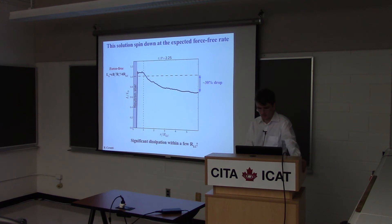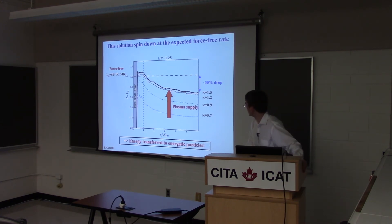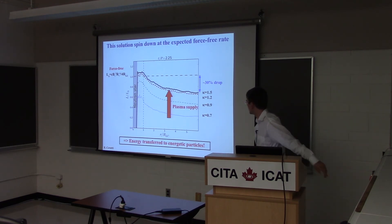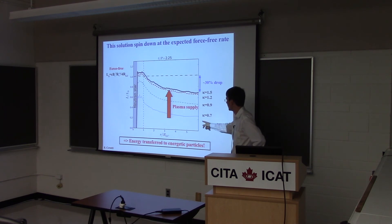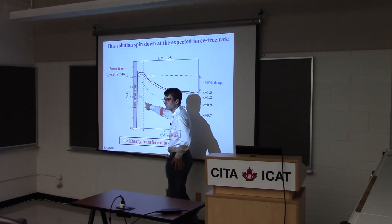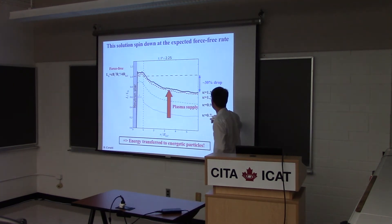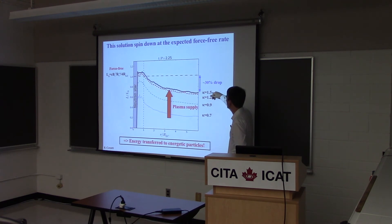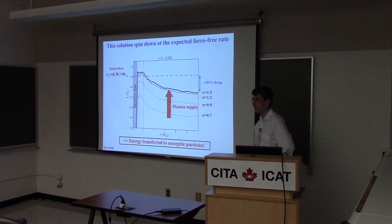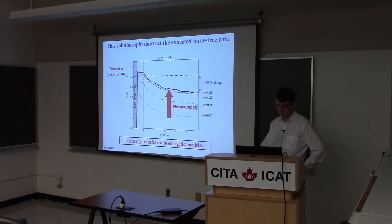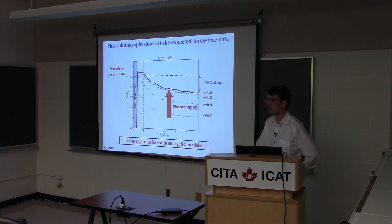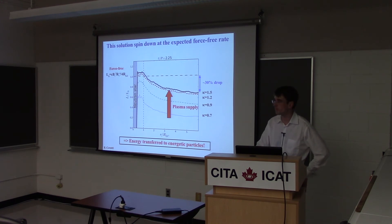As a summary of how spin-down evolves with plasma supply: with a very charge-starved magnetosphere you have about half the force-free spin-down, and as you increase the multiplicity you get closer and closer to force-free — as one would expect. All of these solutions present very high dissipation, which is physical rather than numerical, going into the particles.